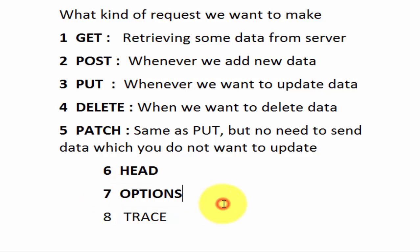Next is OPTIONS. Whenever we hit any API, how do we know what kind of methods that API supports — can we use GET, POST, PUT, DELETE? We can use the OPTIONS method, and in response we will get all the methods which we can use while hitting that particular API.